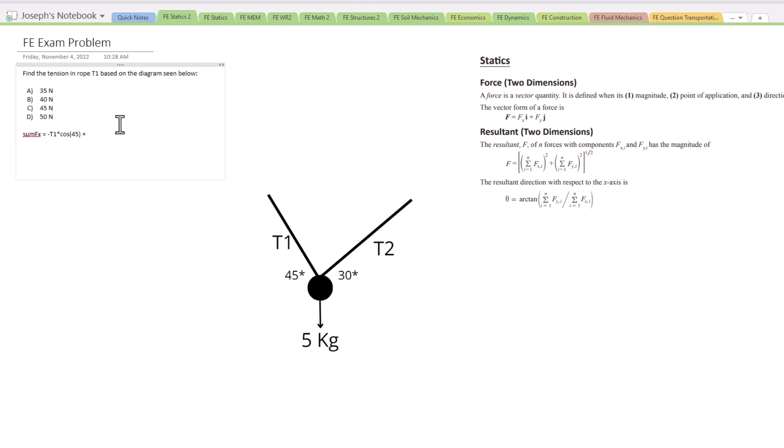Plus here, we've got T2. And that's going to be times the cosine of 30 degrees. So those are the only forces going in the x direction. The 5 kilograms is in the y direction.